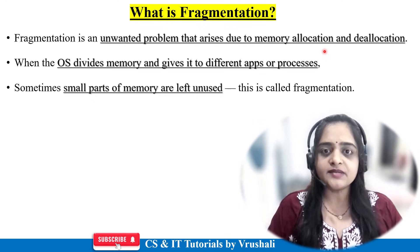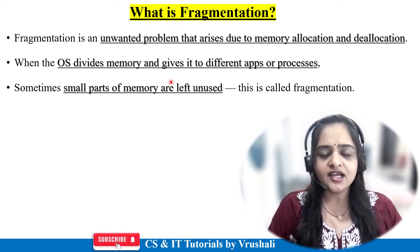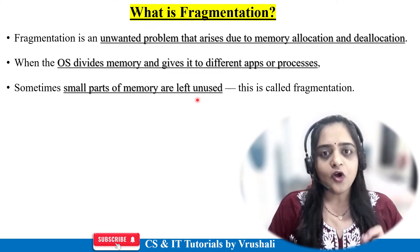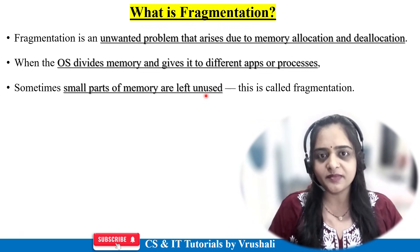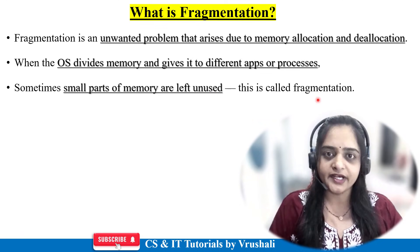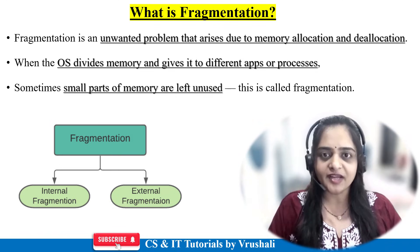The operating system allocates memory to a particular process. But sometimes a particular part of memory is unused — it is a wastage of memory. The operating system cannot use that wastage of memory for any other purpose. This unused or wasted memory is called fragmentation in operating system. Fragmentation is divided into two parts: internal fragmentation and external fragmentation.